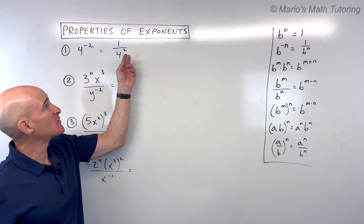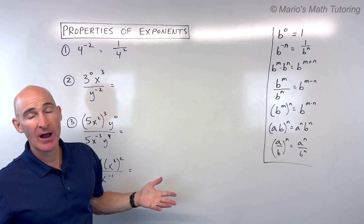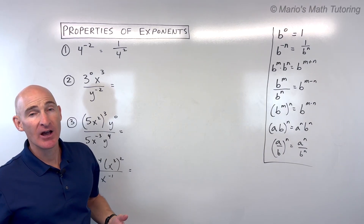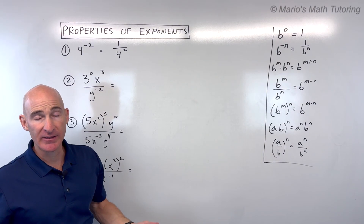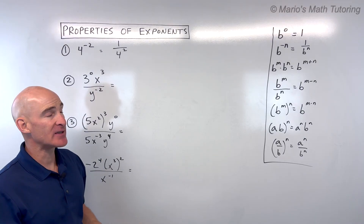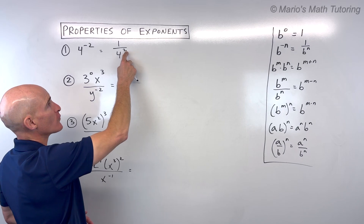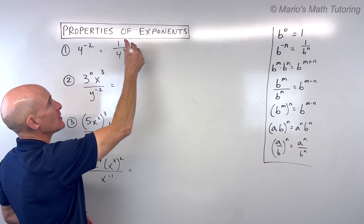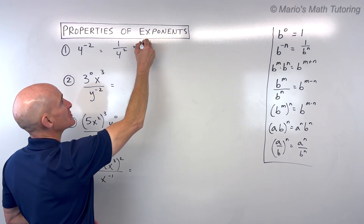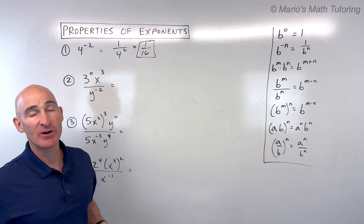So this would be 1 over 4 to the positive 2. Now if this was 4 to the 10th power, you'd probably need a calculator. But if it's something smaller that you can simplify, I would try to simplify it. 4 squared is just 4 times 4, which is 16. So this simplifies to 1 over 16. You want to try to simplify as much as possible.